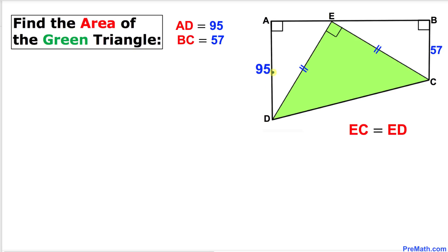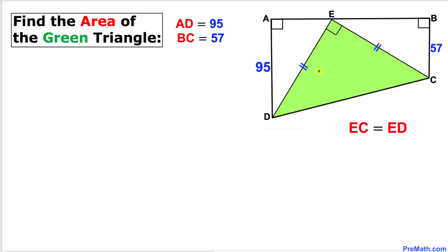Welcome to pre-math. In this video tutorial we have got this trapezoid ABCD with the side length AD equal to 95 and this side length BC equal to 57. Moreover we have got a green right triangle inside this trapezoid such that this side length EC is equal to this side length ED, and now we are going to calculate the area of this green triangle.